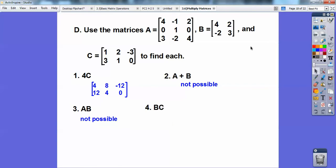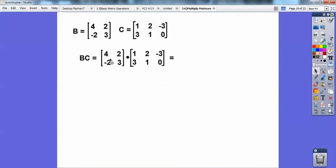How about B times C? Is the number of columns here, 2, equal to the number of rows here, 3? Yes, so I can multiply this. So I'll do this on the next page over here. So it's going to be, here's B, here's C, and I'm going to multiply it. So I'm going to multiply 4 times 1 plus 2 times 3. That's going to be my top first number right there, 4 times 1 plus 2 times 3.